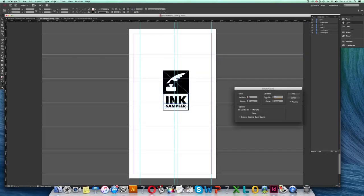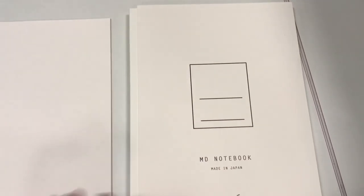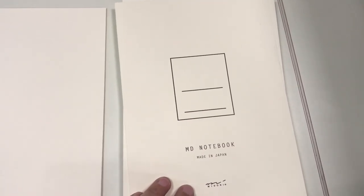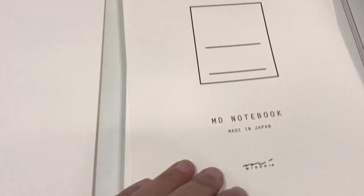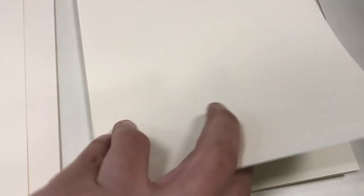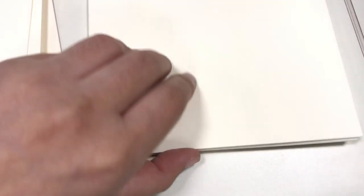I decided to take apart a Midori MD A5 notebook to use the pages of it for this ink sampler. This is the same notebook that I'm using as a journal and I have a review of this notebook on my channel which I'll link down below. I really like the paper of this notebook. It's just the right thickness and it can take a lot of very wet media without any problem and without any bleed through, so I decided that this would be the perfect paper for my ink sampler book.